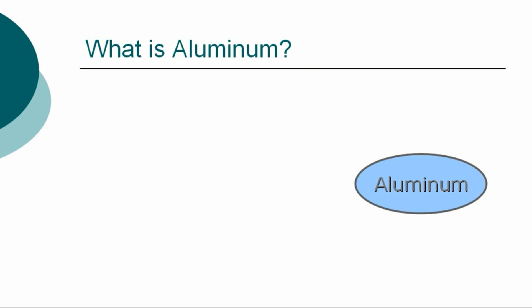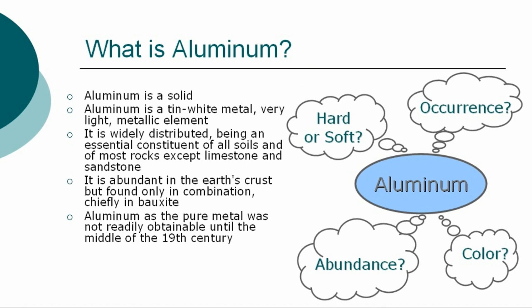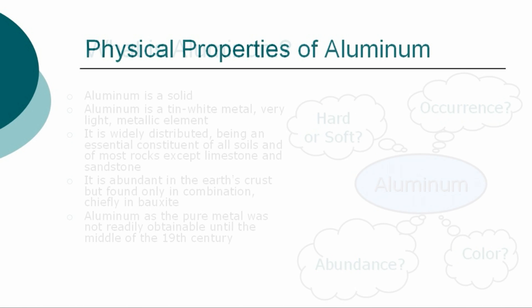What is aluminum? It is a tin white, very light, metallic element. It is widely distributed, being an essential constituent of all soils and of most rocks except limestone and sandstone. It is the most abundant metal in the earth's crust, but is found only in combination, chiefly in bauxite.